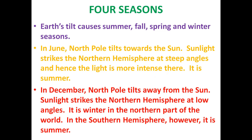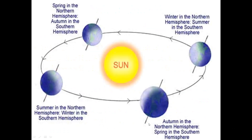In December, the north pole is tilted away from the Sun. Sunlight strikes the northern hemisphere at a low angle, so the intensity of the sunlight is less — it is winter during this period. At the same time, it is the opposite season in the southern hemisphere.